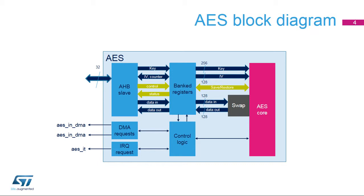The AES core is the unit in charge of processing data. Its logic supports 1, 8, 16, or 32-bit data swapping. Internal data paths are 128 bits wide for data and initialization values, and 256 bits for keys. 128-bit keys are also supported.